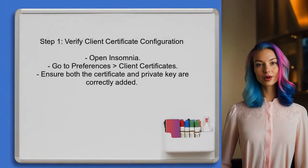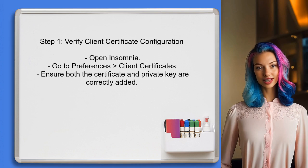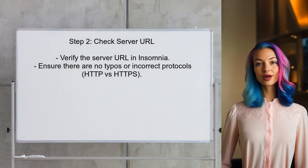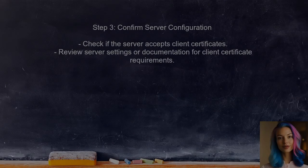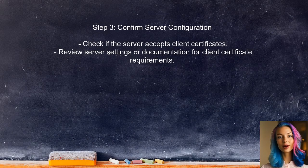To begin troubleshooting the connection issue, first verify that the Client Certificate files are correctly added in Insomnia. This includes ensuring that both the certificate and the private key are properly configured. Next, check the server URL and ensure it is correct — sometimes a simple typo in the URL can lead to connection errors. Also confirm that the server is configured to accept Client Certificates, which may involve checking the server settings or consulting the server documentation.